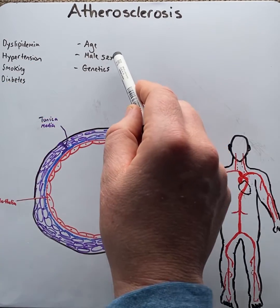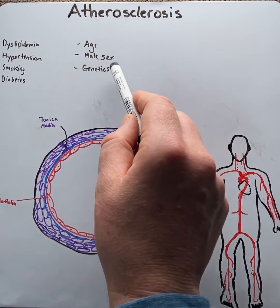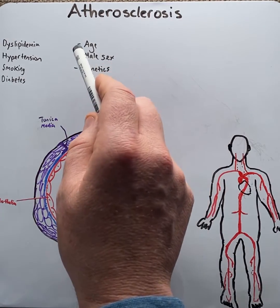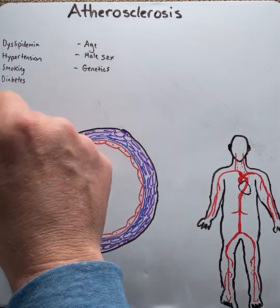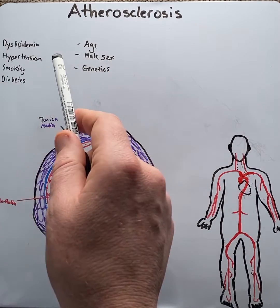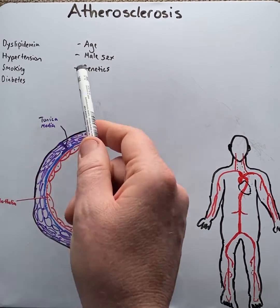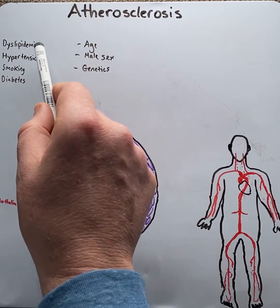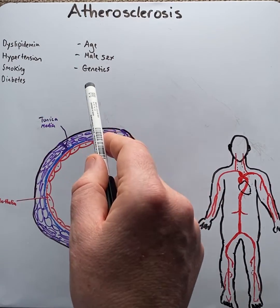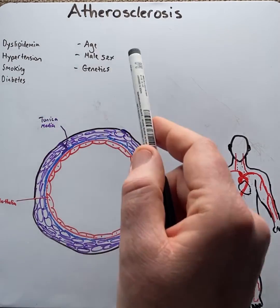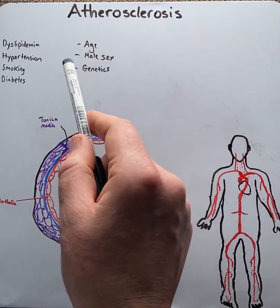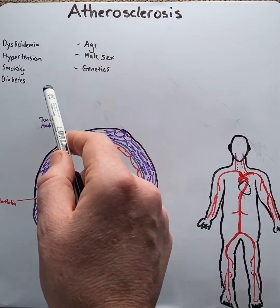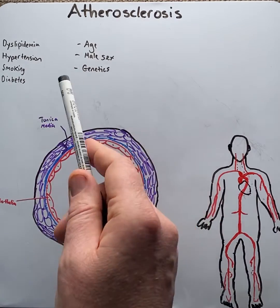Whilst increase in age, male sex, and genetics are non-modifiable — therefore they cannot be changed. It's important to note that these risk factors have a compound effect on the outcomes of atherosclerosis. For instance, if you were to have two risk factors, your chance of having a heart attack caused by atherosclerosis is four-fold increased, whereas if you have three, it's seven times increased.